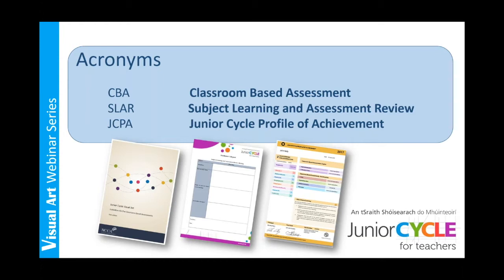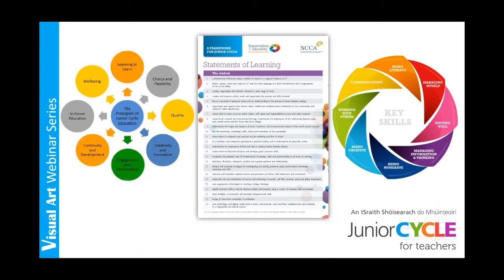JCPA stands for junior cycle profile of achievement, which outlines students' achievements in CBA 1, CBA 2, the SEC component and other areas of learning. As you may be aware from the whole school CPD day, the framework for junior cycle follows the above format. It consists of eight principles, 24 statements of learning and eight key skills. All of the junior cycle specifications are supported by this framework.